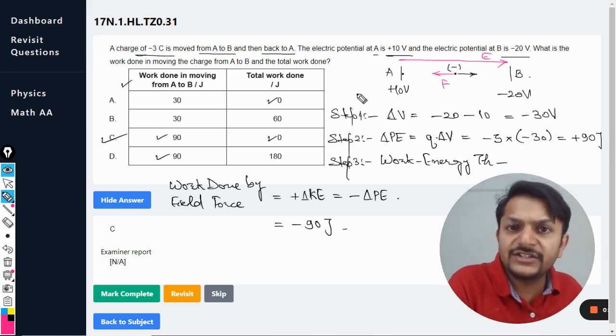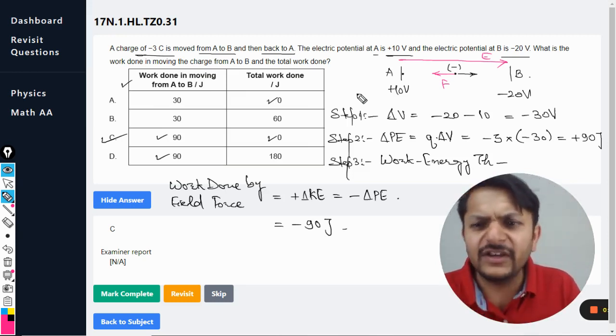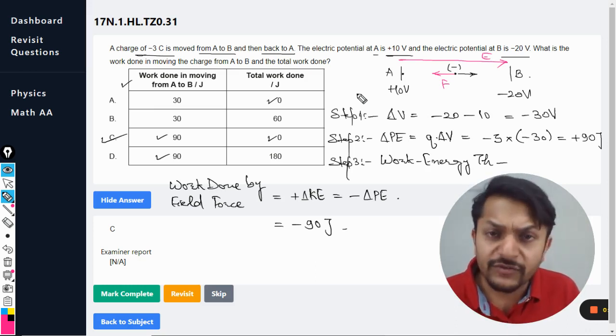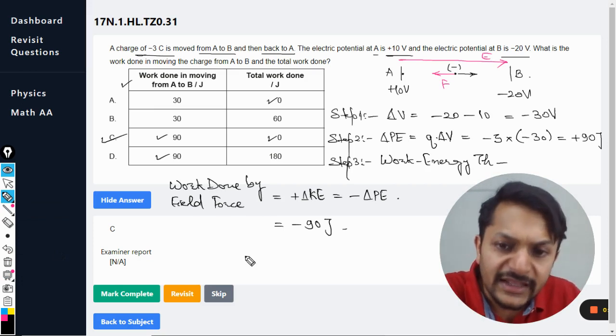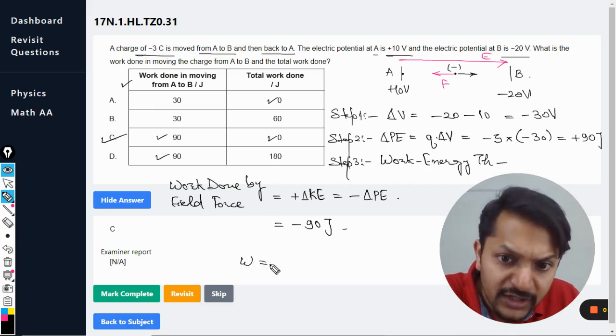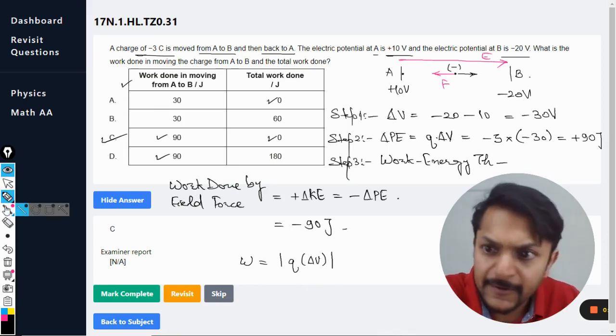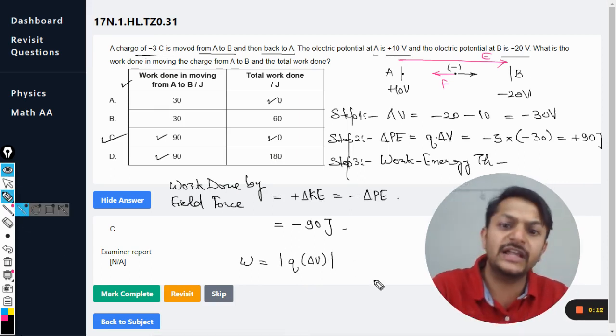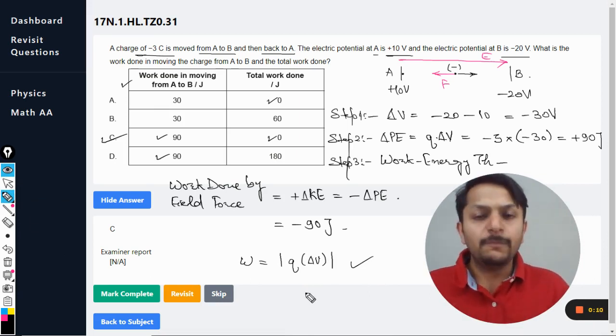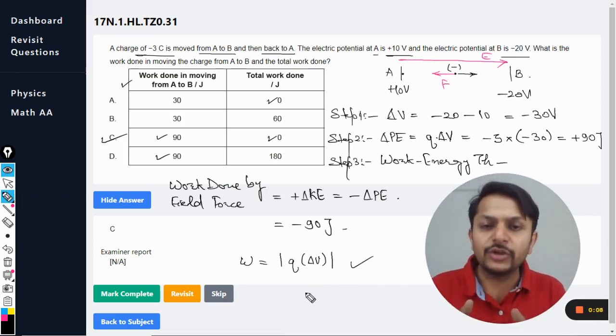And now the other thing is yes we can say that the work done by the external agency is positive. Anyways we can take the positive answer also. We can say that in the case of IB, like they are just using this formula: mod q into delta V. This is what they are doing - yeah, q into delta V, and by using this formula you will always get a positive value, and so you can definitely say that the answer is C.